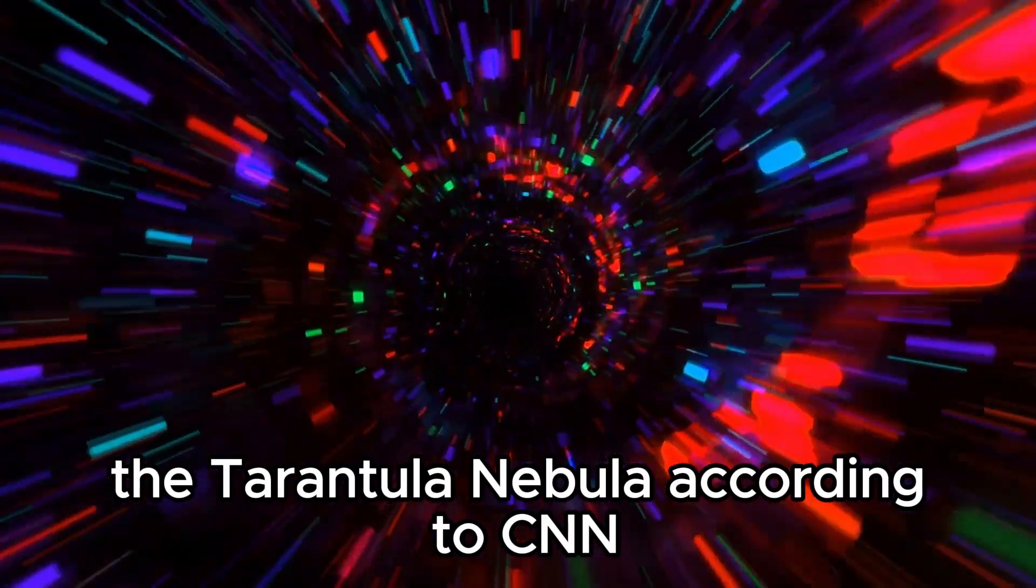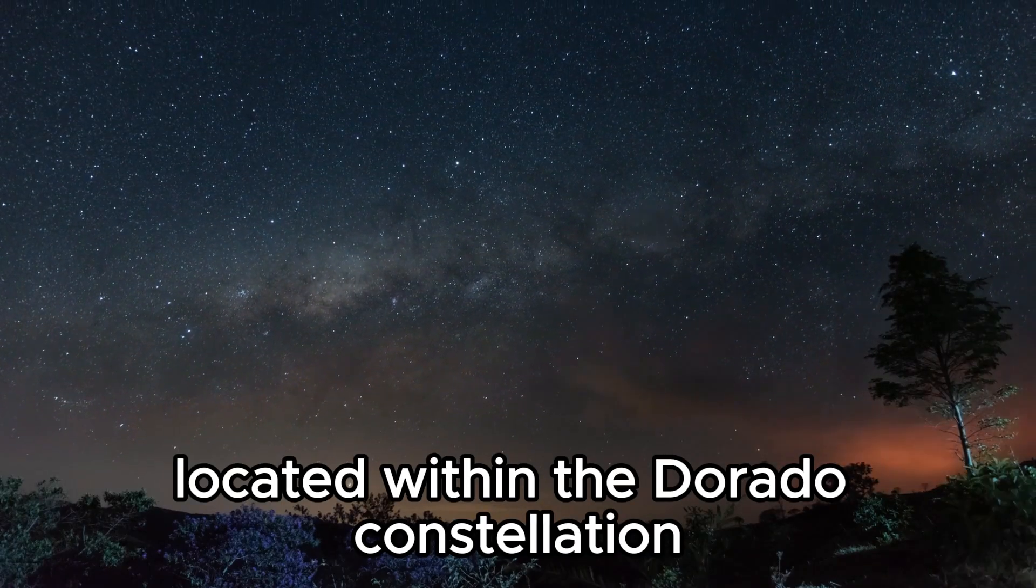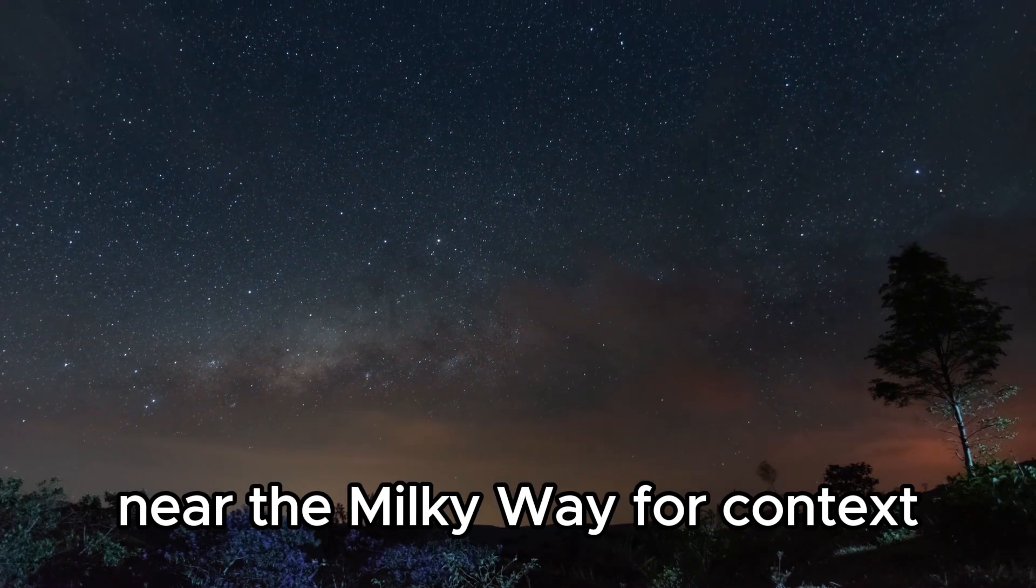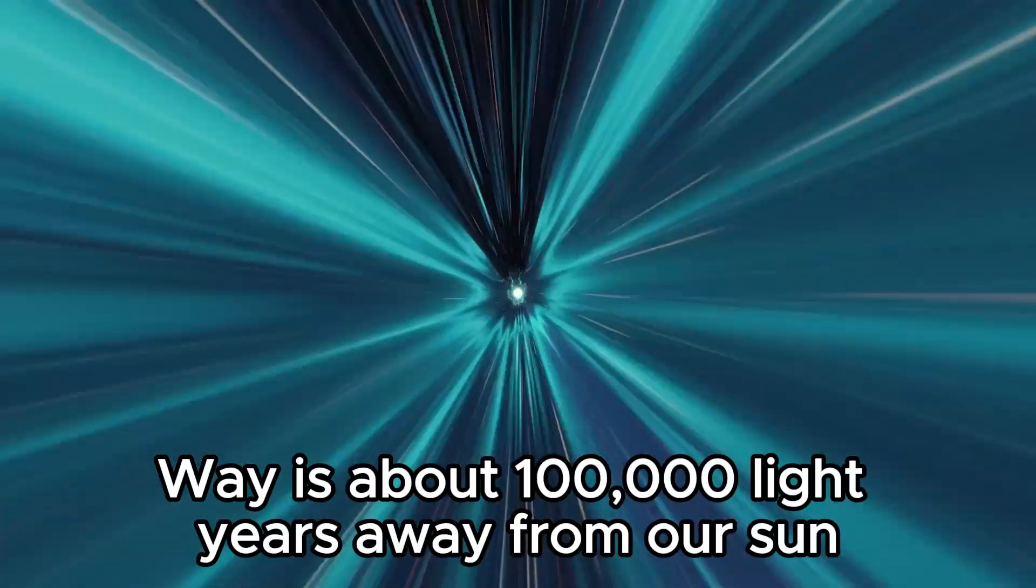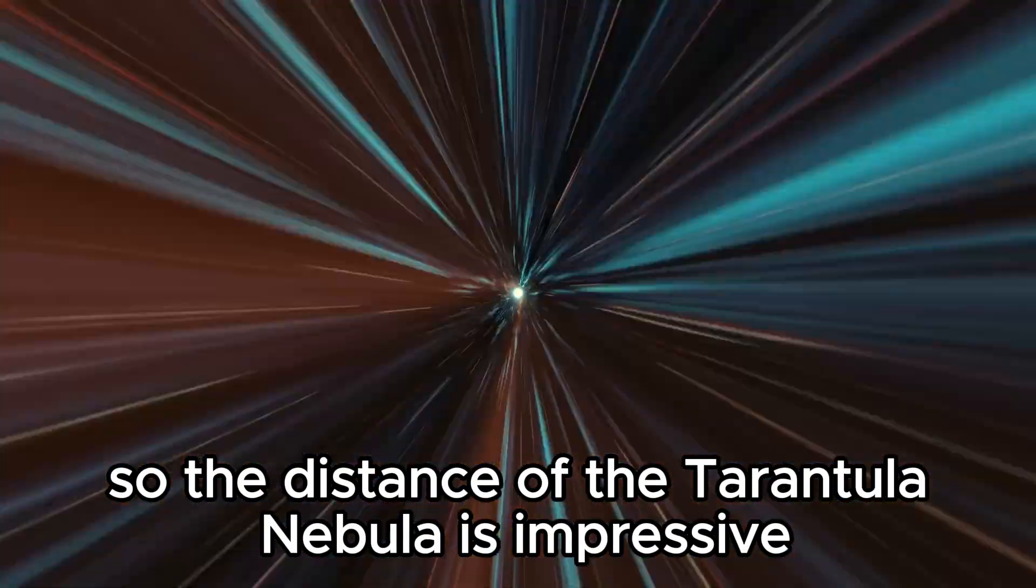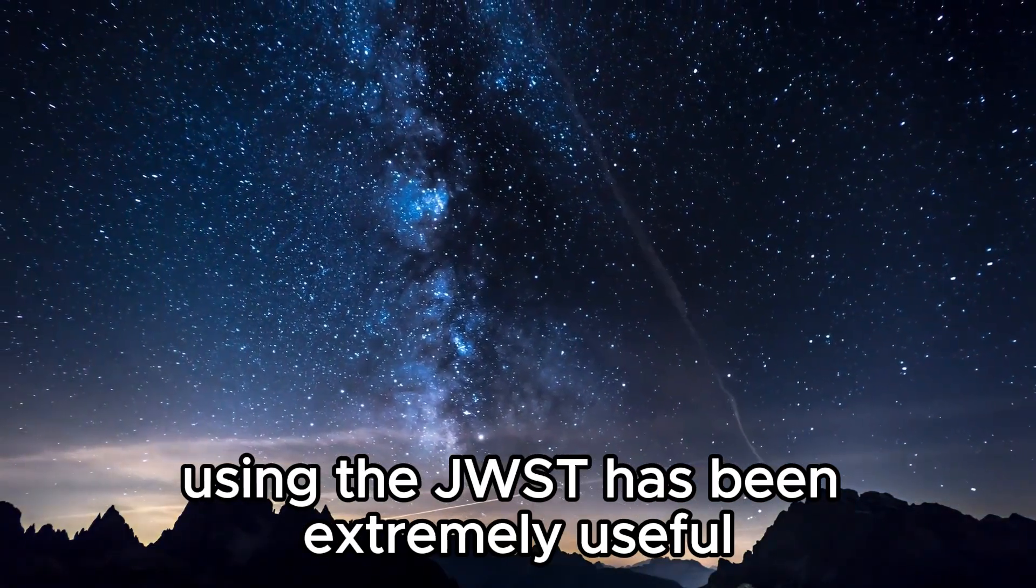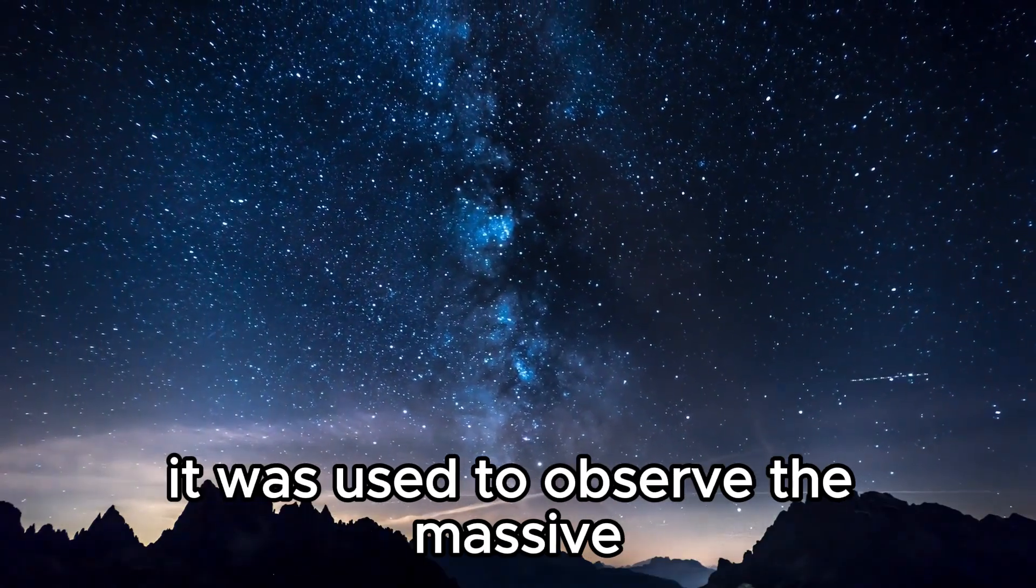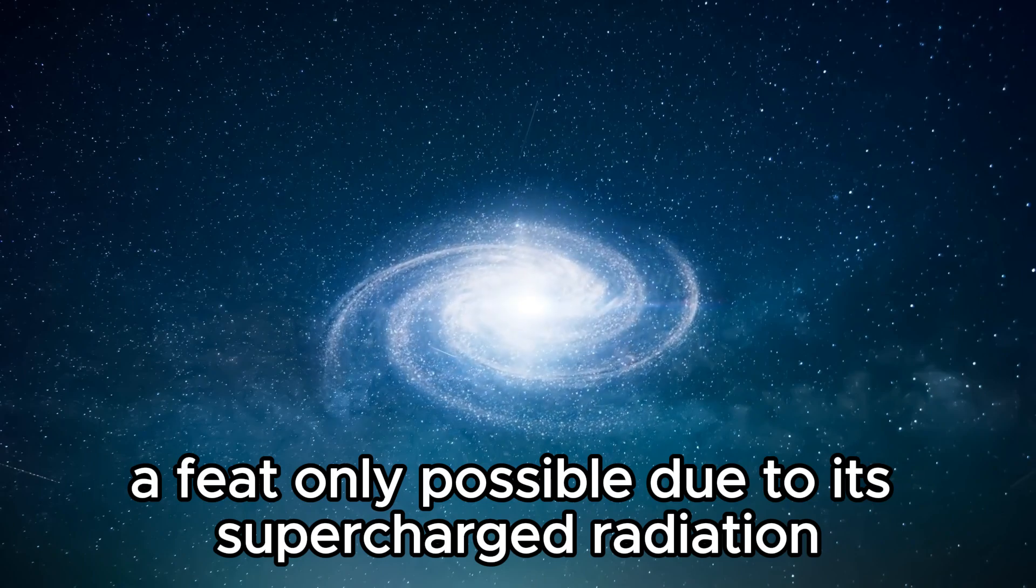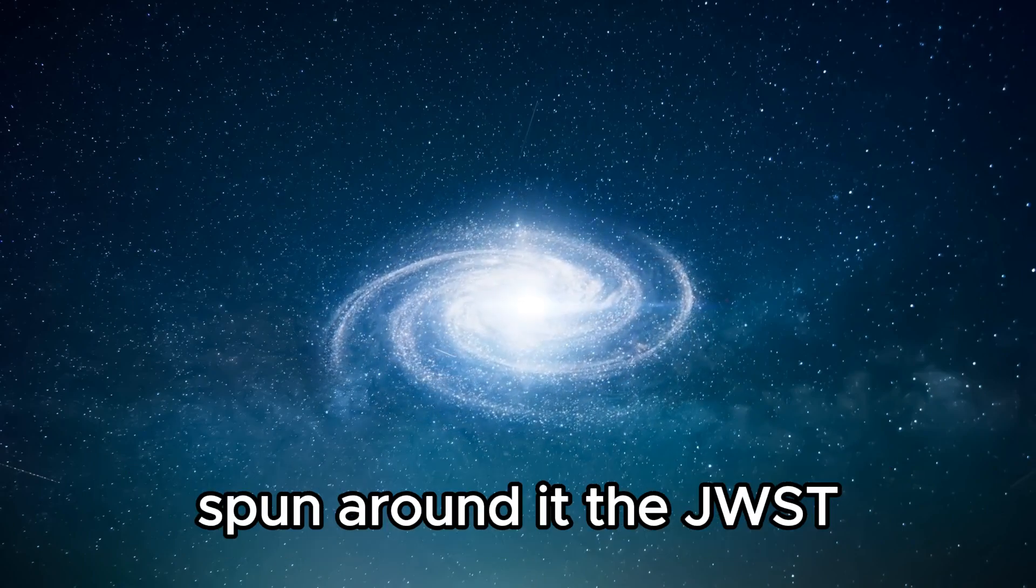According to CNN, the Tarantula Nebula is 161,000 light-years away, located within the Dorado constellation, making it one of the largest star-forming regions near the Milky Way. For context, the Milky Way is about 100,000 light-years away from our Sun, so the distance of the Tarantula Nebula is impressive. The data obtained from the Tarantula Nebula using the JWST has been extremely useful. It was used to observe the massive young stars formed in the heart of the nebula, a feat only possible due to its supercharged radiation that illuminates and gives the appearance of silk-spun around it.